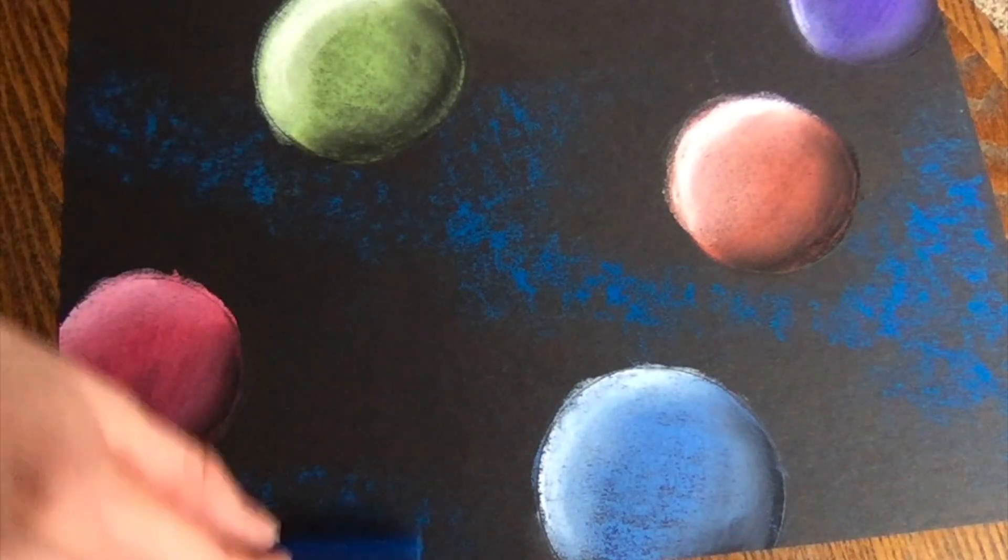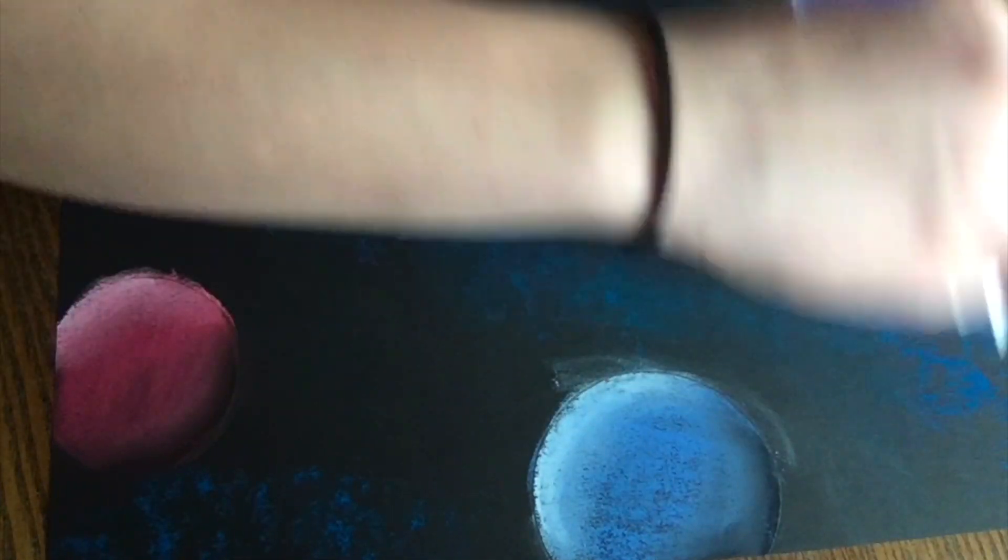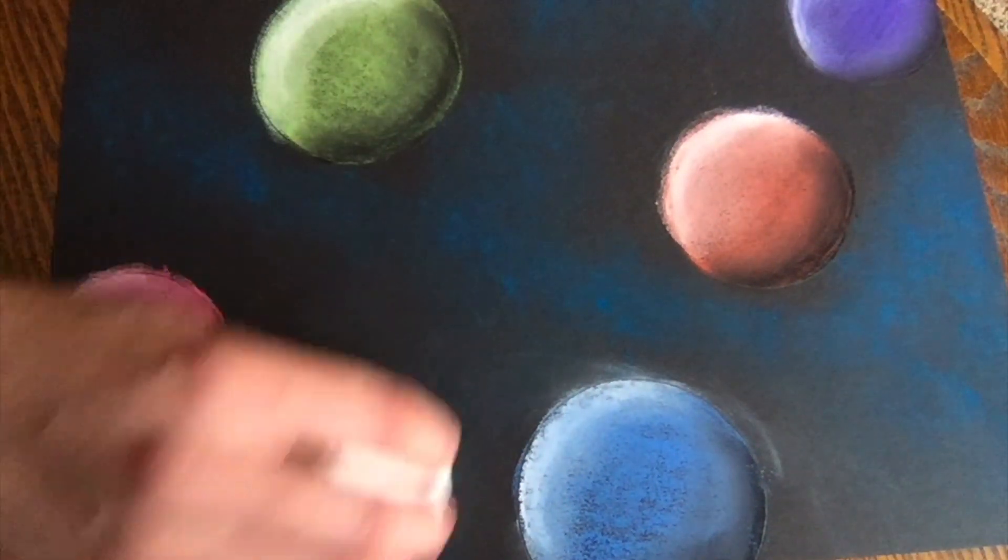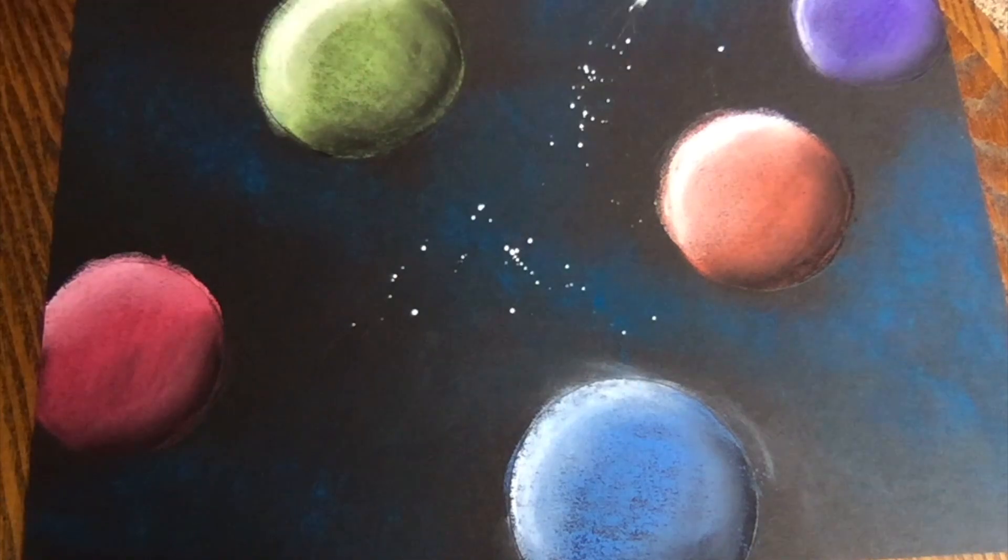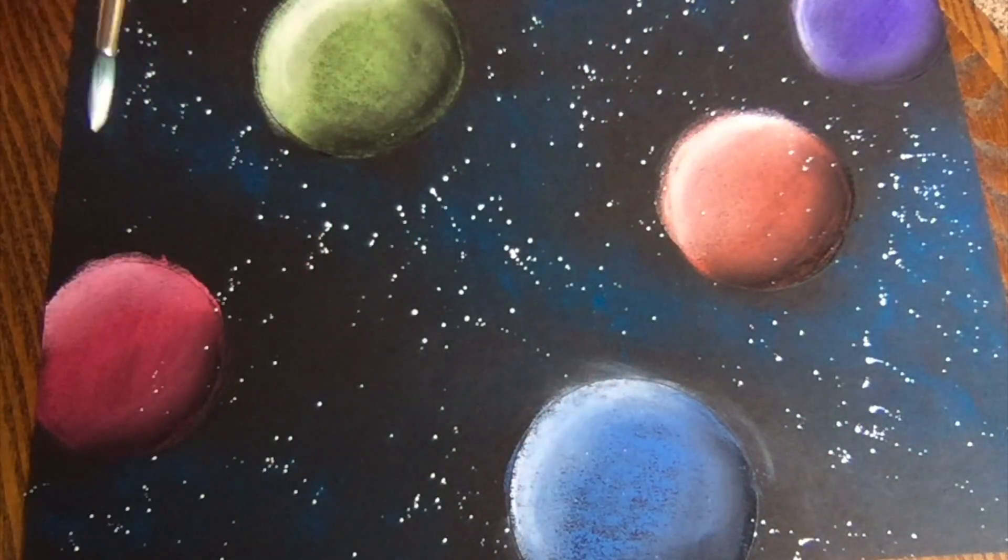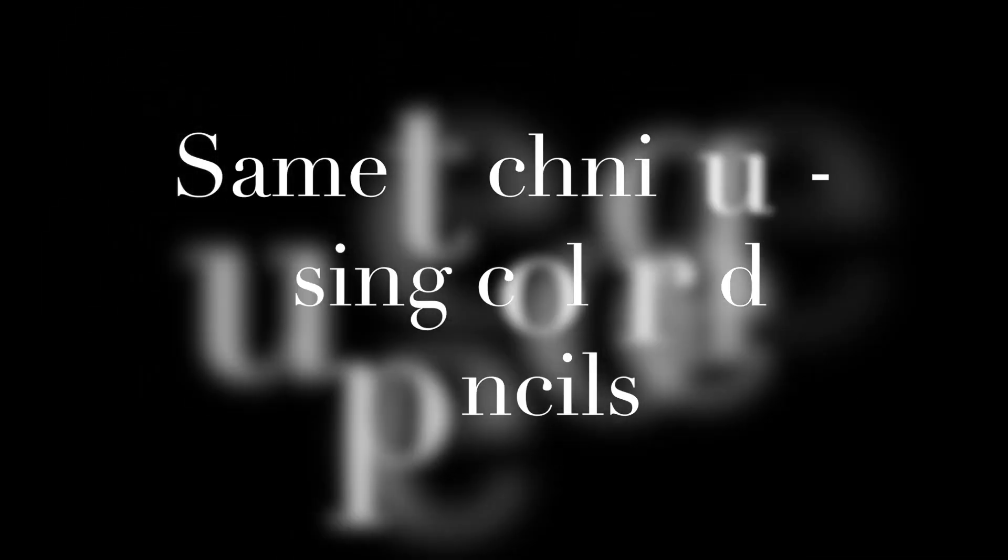Now you could absolutely stop there. But if you wanted to, you could add some extras to your background. So I went through and added a little bit of blue chalk pastel, blended that in with a paper towel or a tissue. And then I took a little bit of white paint mixed with water and kind of splattered that to look like it was some stars. And that really helped it look like a galaxy.